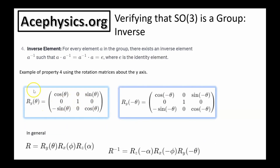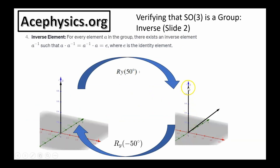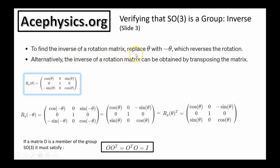The fourth and final property is that every group must have an inverse element. For SO3, consider the rotation matrix about the y-axis: Ry(θ) rotates an object by θ about the y-axis, and the inverse operation is Ry(−θ). A vector pointing up in the z direction rotated by 50 degrees and then by −50 degrees returns to the same vector, showing Ry(−50°) is the inverse of Ry(50°). To find the inverse of a rotation matrix, replace θ with −θ. Alternatively, the inverse can be obtained by transposing the matrix, since cosine is an even function and sine is an odd function.